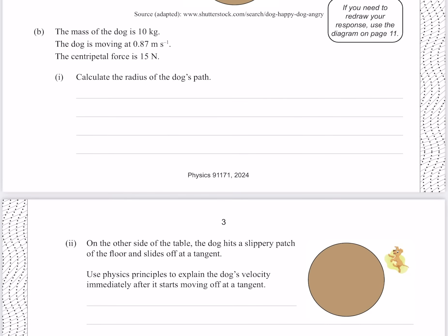The mass of the dog is 10 kilograms, the dog is moving at 0.87 meters per second and the centripetal force is 15 newtons. Calculate the radius of the dog's path. We know that the centripetal force is equal to the mass times velocity squared over r. We can solve that for r by swapping these two around. Since we know all of these values, we just need to put our numbers in, which gives me 0.50 meters to two significant figures.